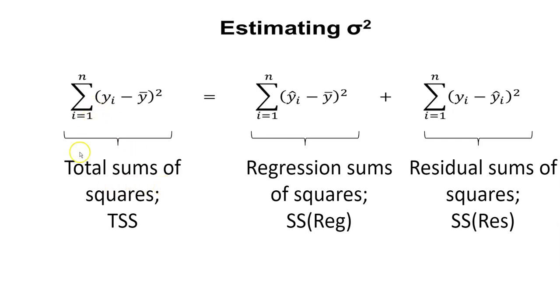And so as an example, the total sums of squares we could think about as each value y sub i minus the mean value for y squared. We can break that down into component parts or partition the variability into the regression sums of squares and the residual sums of squares. And so the regression sums of squares will indicate how much is explained by the regression line. That is, yi hat minus y bar squared. And we add up all those values for everything in the data set.